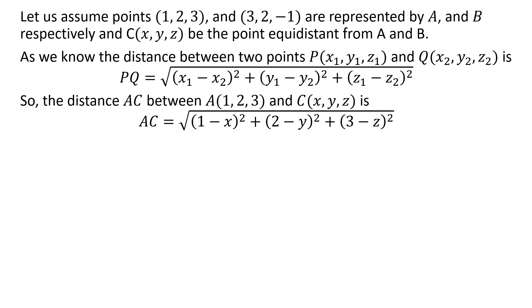So the distance AC between the points A(1, 2, 3) and C(x, y, z) is equal to the square root of (1 - x)² + (2 - y)² + (3 - z)².